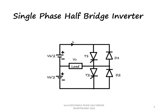This half bridge inverter consists of a three wire DC supply, which means that there is a neutral point and there are two sources, each having a value of Vs/2 — half the value of the total voltage. There are two thyristors T1 and T2, and D1 and D2 are the diodes used for the protection of the thyristors.